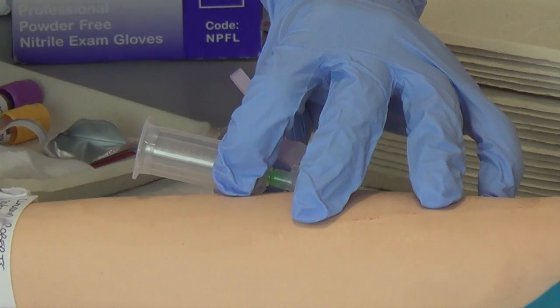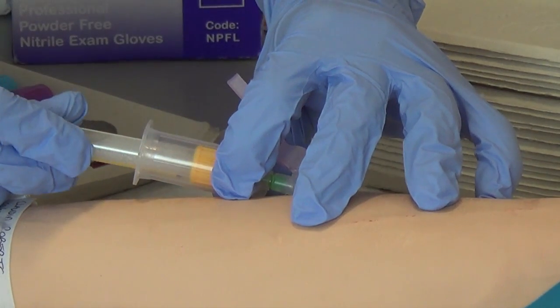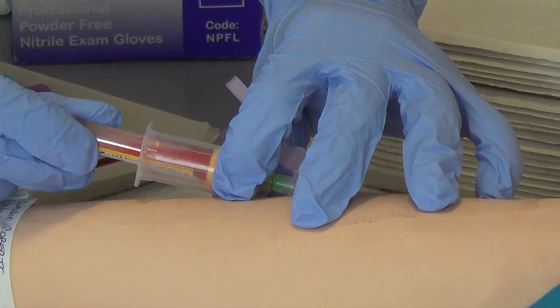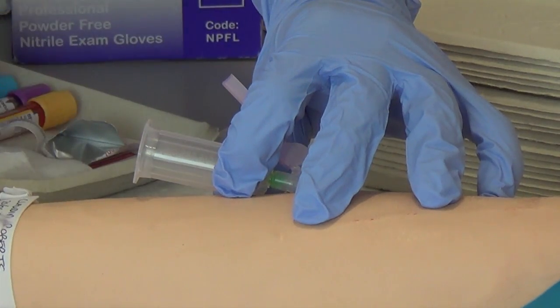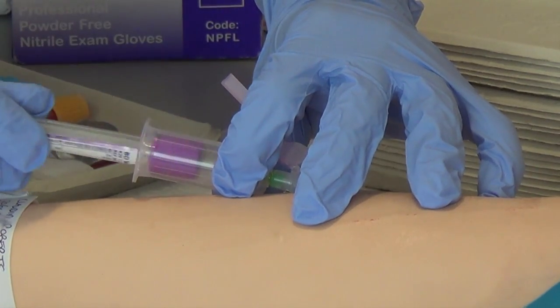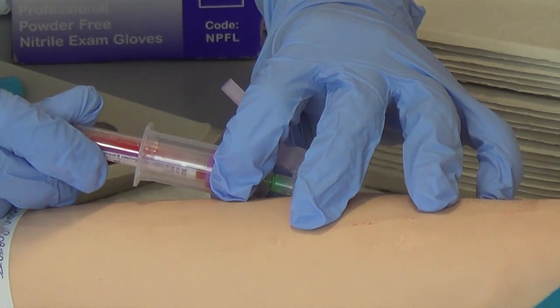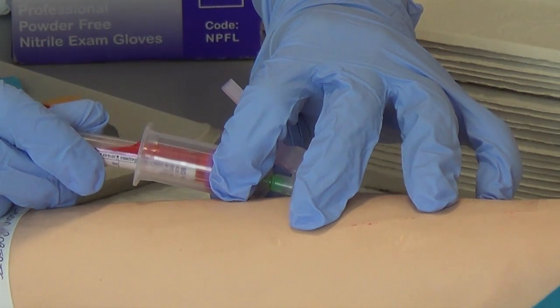Now that it is, you remove that, take your yellow or gold and attach that, and again fill it with blood. And then finally the purple. While you're doing this, it's important to occasionally just look up at the patient and make sure they're comfortable and not showing any signs of distress.